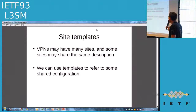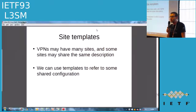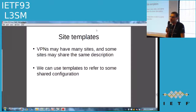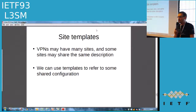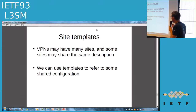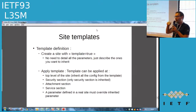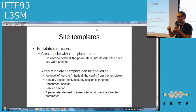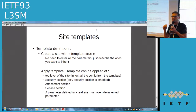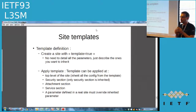Site templates: the configuration of a site can be really complex, and within a VPN — for example, hub-and-spoke — all the spoke sites may have the same configuration. To limit overhead, we are proposing site templates. There is a special leaf called 'templates'; if set to true, the site is not a real site but just a template. You can define some parameters — a cost policy, availability information, security parameters — and within a regular site, apply these templates at specific points: top level, service level, attachment level, or security section.